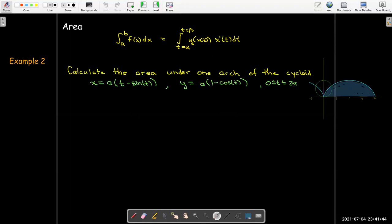So let's work out an example. We'd like to calculate the area under one arch of the cycloid. And it's just going to be a cycloid generated by a circle of radius a. So the parametric equations are x equals a times the quantity t minus sine of t, and y equals a times the quantity 1 minus cosine of t. And one arch means we'll just go from 0 to 2 pi.